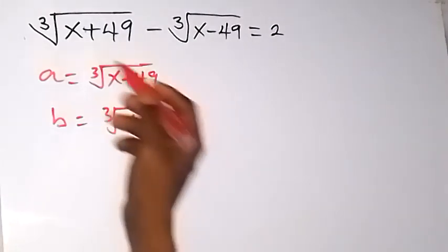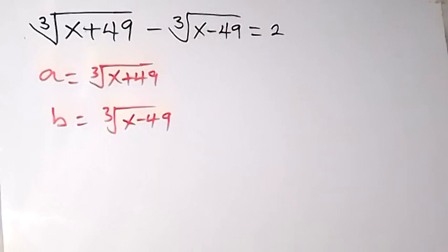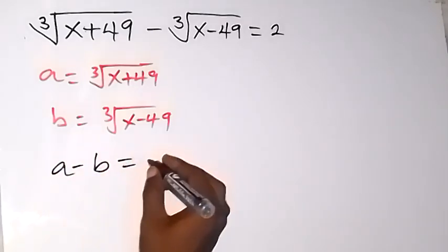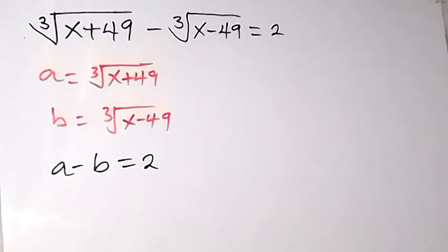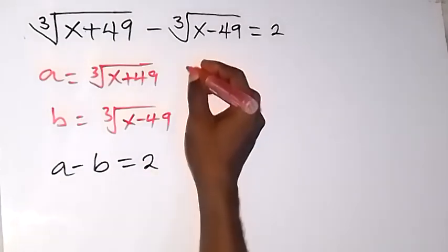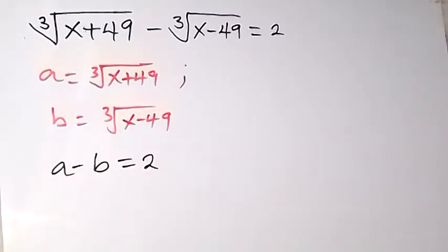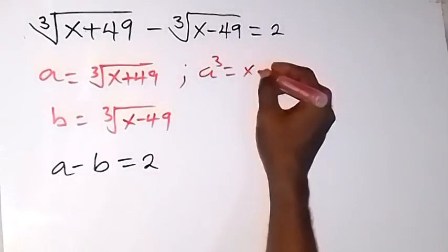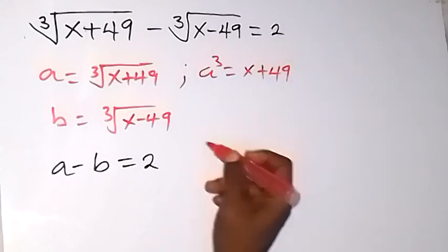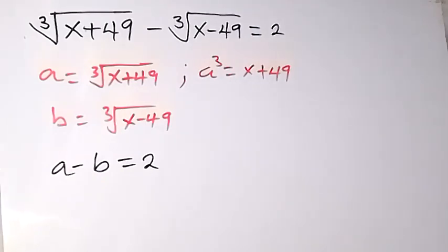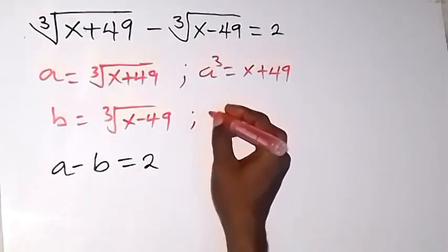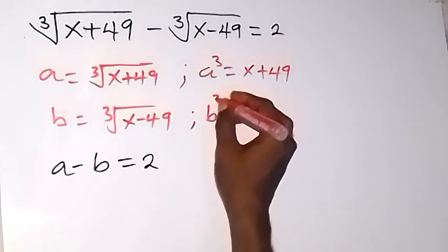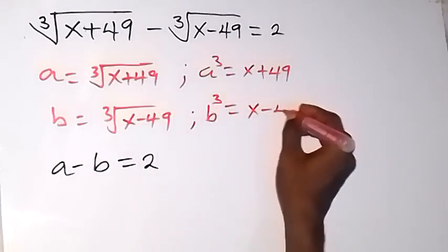From there we can rewrite the equation: a minus b equals 2. Taking the power of three on both sides, a cubed equals x plus 49 — because the cube power cancels the cube root — and b cubed equals x minus 49.